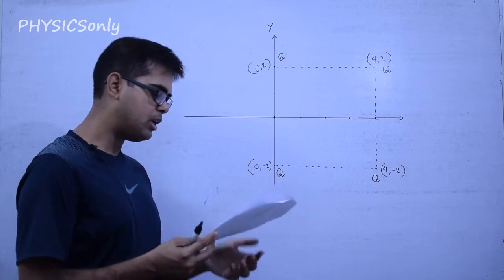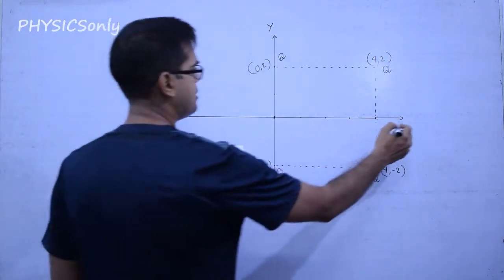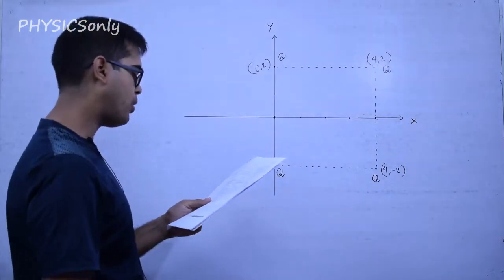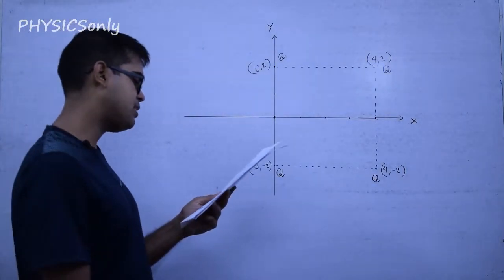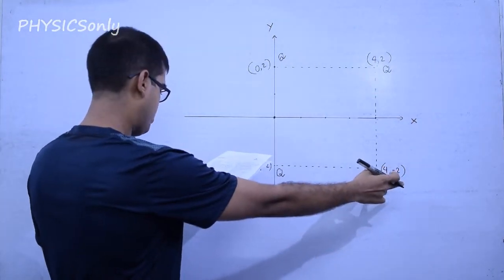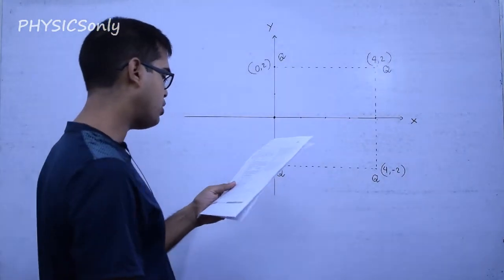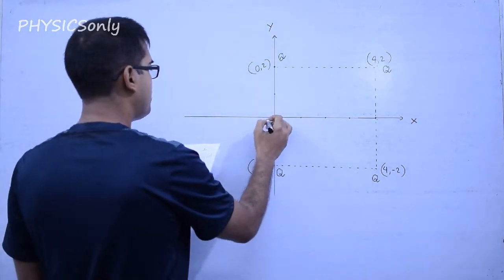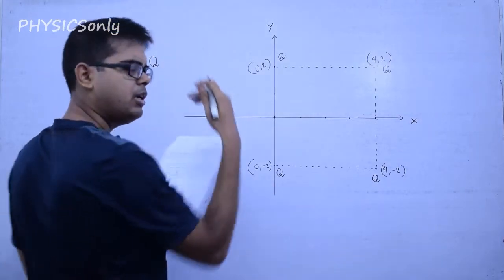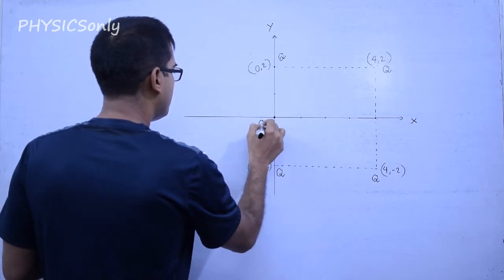The problem states that four equal point charges Q each are placed in the x-y plane — this is our x and y, and this is the z direction. The four charges are placed at coordinates (0,2), (4,2), (4,-2), and (0,-2). The work required to put a fifth charge Q at the origin of the coordinate system is what we need to calculate — the work done to bring the fifth charge from infinity to the origin at (0,0).